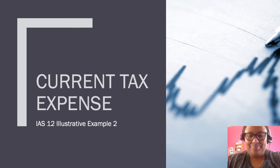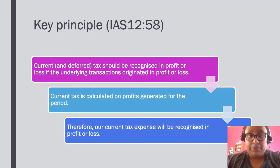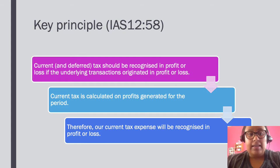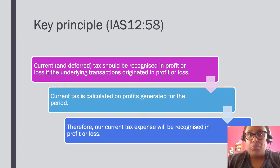The key principle is found in IAS 12 paragraph 58, which basically says that current and deferred tax should be recognized in profit or loss if the underlying transactions originated in profit or loss. To put it simplistically: the tax must go wherever the transaction went. So if the underlying transactions arose in profit or loss, then the tax must also be recognized in profit or loss.